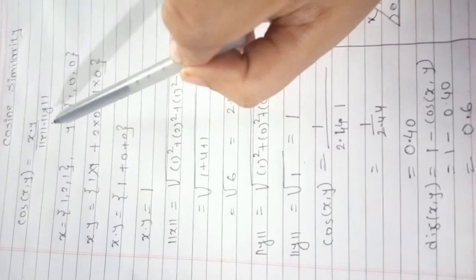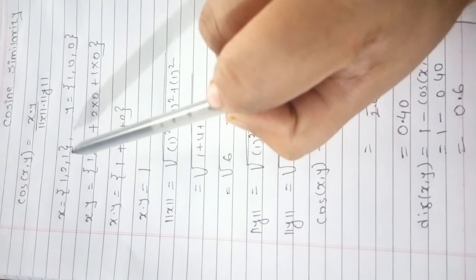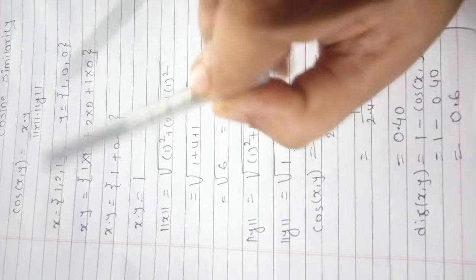This is x = (1, 2, 1) and y = (1, 0, 0). Now, find out x dot y.